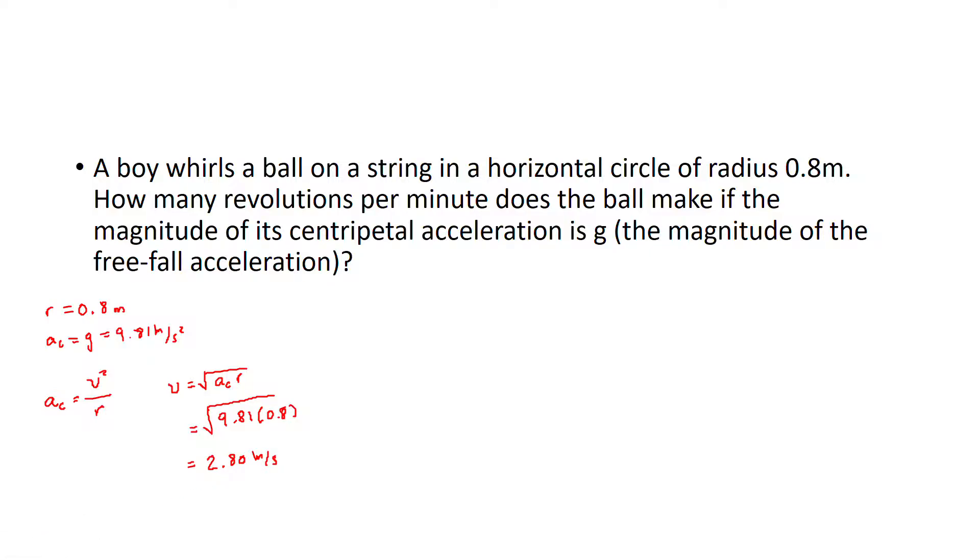From there we can go to the next formula, the second one we know, that says velocity is equal to 2 pi r over... no, not gravity, period. Sorry, I always get confused about that. It's the period.